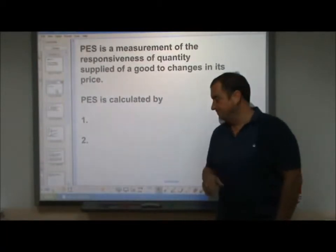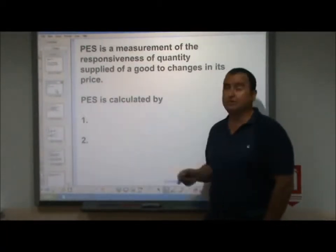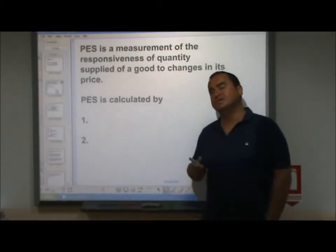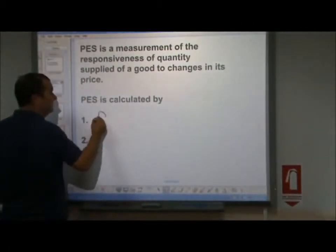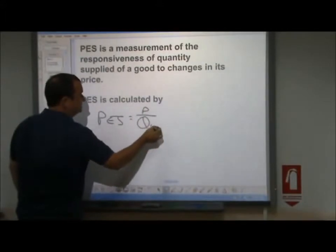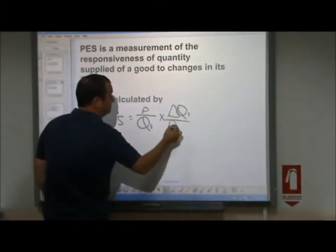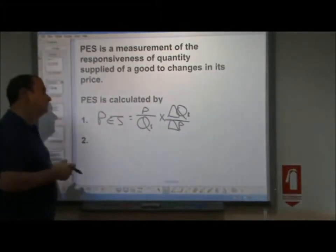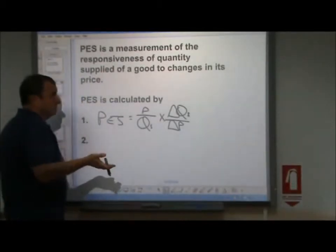There are no negatives involved in the values of PES. The equations we use to calculate PES: price elasticity of supply can be calculated by P over QS times change in quantity supplied over change in price — I put the S there just to remind you we're looking at quantity supplied, not demanded. But it is, of course, the same equation structure.